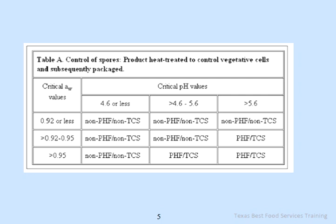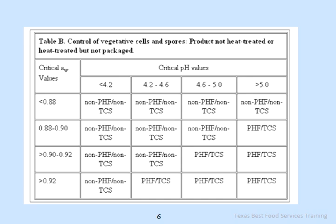This table shows different PH values and AW values. Notice that as the PH increases and the AW increases, the more likely it is to be a PHF-TCS food. Another chart shows control of vegetable cells and spores — again, at the higher PH and higher AW, the more likely it is to be a PHF-TCS food.